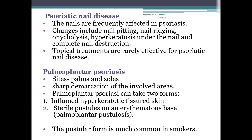Next is psoriatic nail disease. The nails are frequently affected, and in a small portion of patients the nails are the only area affected. Changes include nail pitting, nail ridging, onycholysis (separation of the nail from the nail bed), hyperkeratosis under the nail, and complete nail destruction. Topical treatments are rarely effective; systemic treatments such as methotrexate, when prescribed for generalized psoriasis, may also improve nail disease.